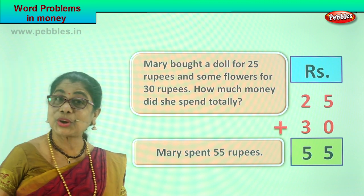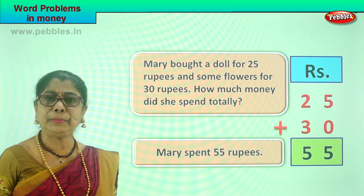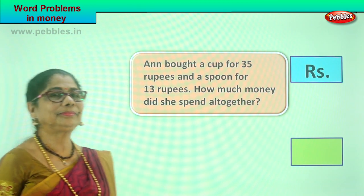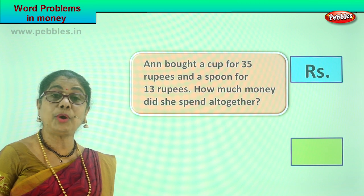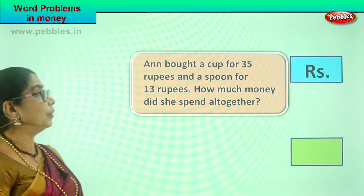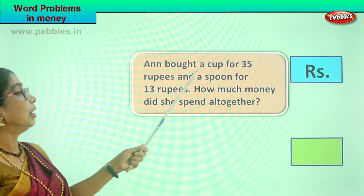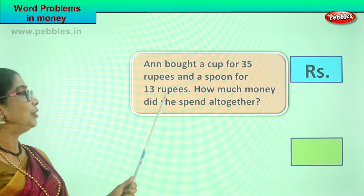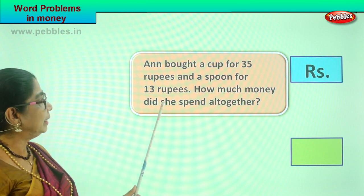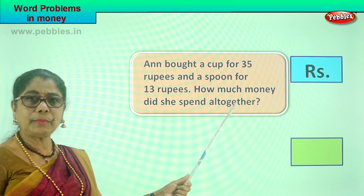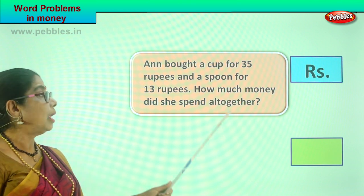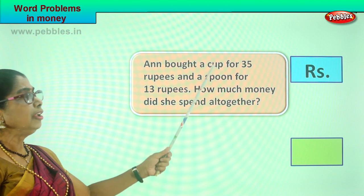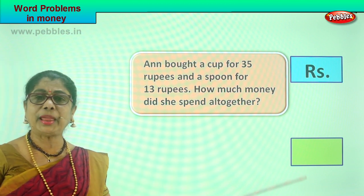Did you enjoy shopping with Mary? Let's take another word problem and let's go shopping. Who is shopping today? Here is Anne — she would like to go shopping with her mom. What does she want to buy? Anne says: Mama, I bought a cup for 35 rupees and a spoon for 13 rupees. And then mummy says: how much money did she spend all together? Mummy wants to know because she has to give the shopkeeper. You are going to find out the amount she spent on a cup and a spoon.